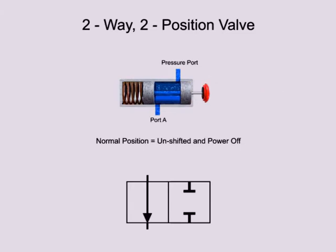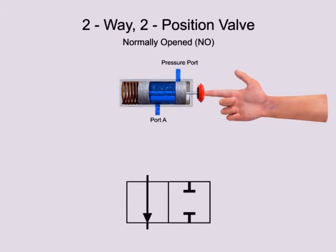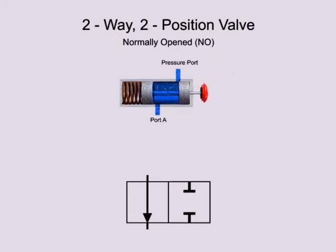The terms normally opened and normally closed are used to describe the condition of a valve when it is in the normal position. For this valve, the normal position is position 1, which allows unrestricted fluid flow through the open ports. Therefore, this valve is a normally opened valve. Additionally, this valve is a spring return valve, meaning that after it is actuated, a spring returns the spool to the normal position.